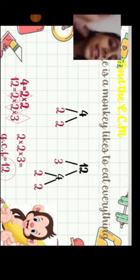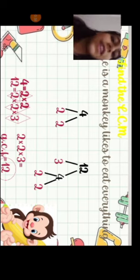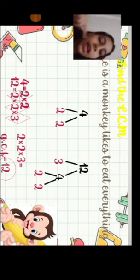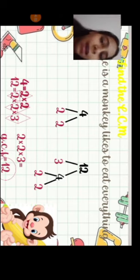But the least common multiple, we said, likes to eat everything. We will not leave anything alone. So if we find the same number up and down, we take one. So 2 times 2 times 3. The answer is 12. So the least common multiple is 12.